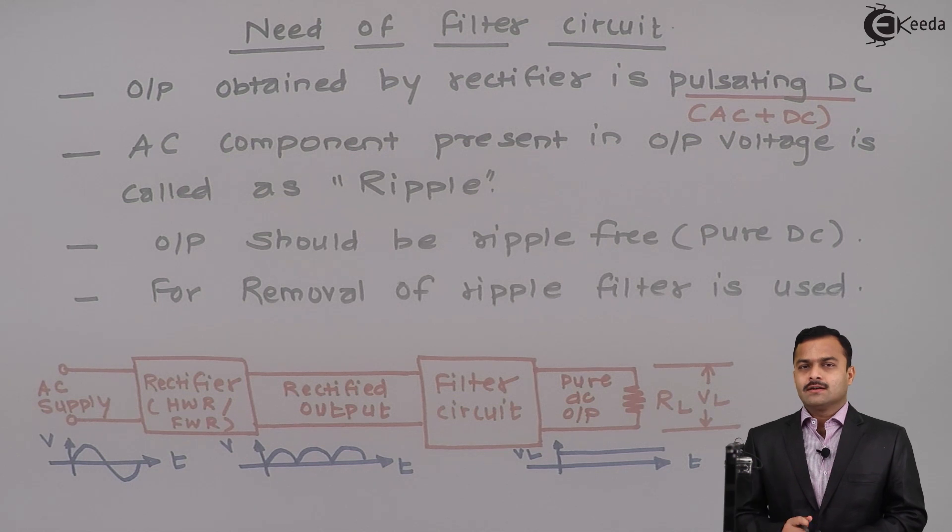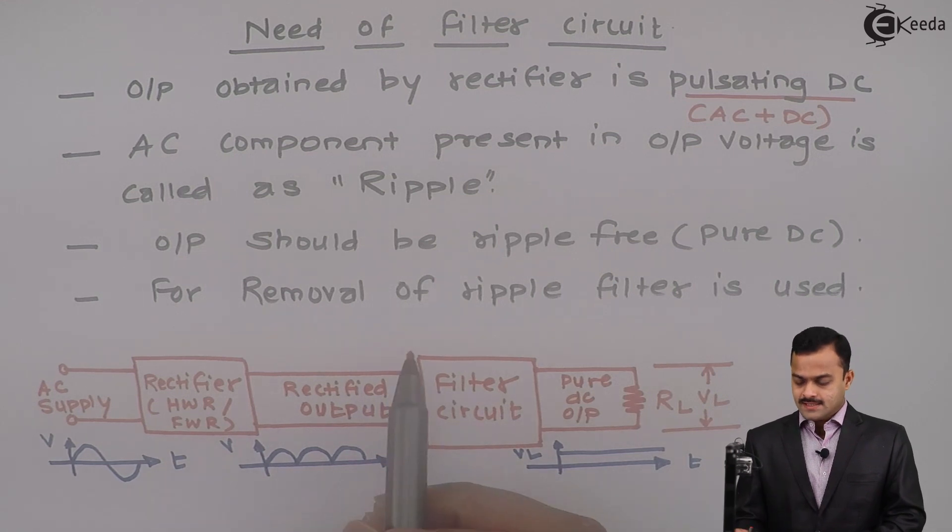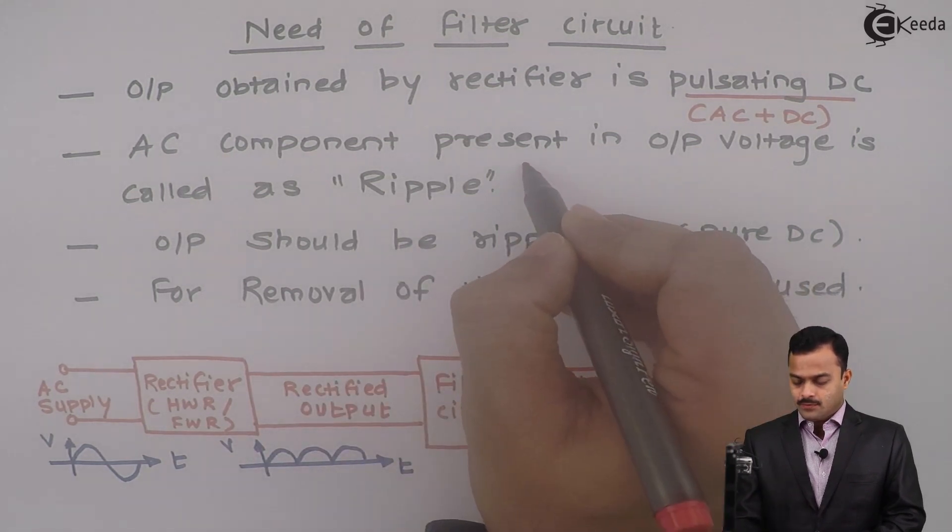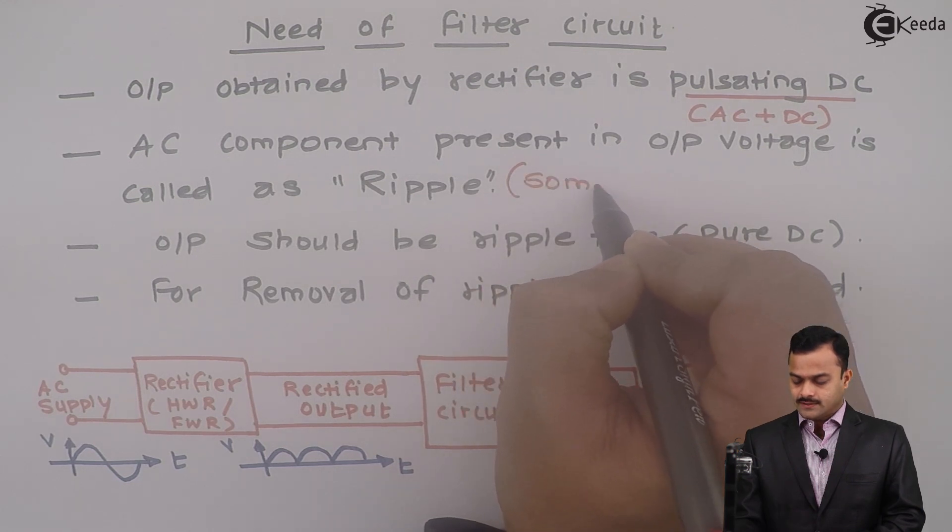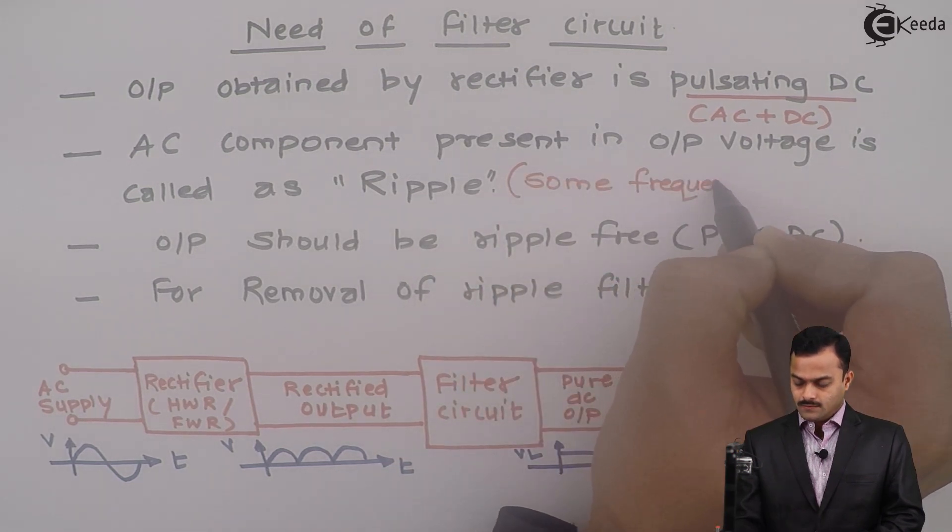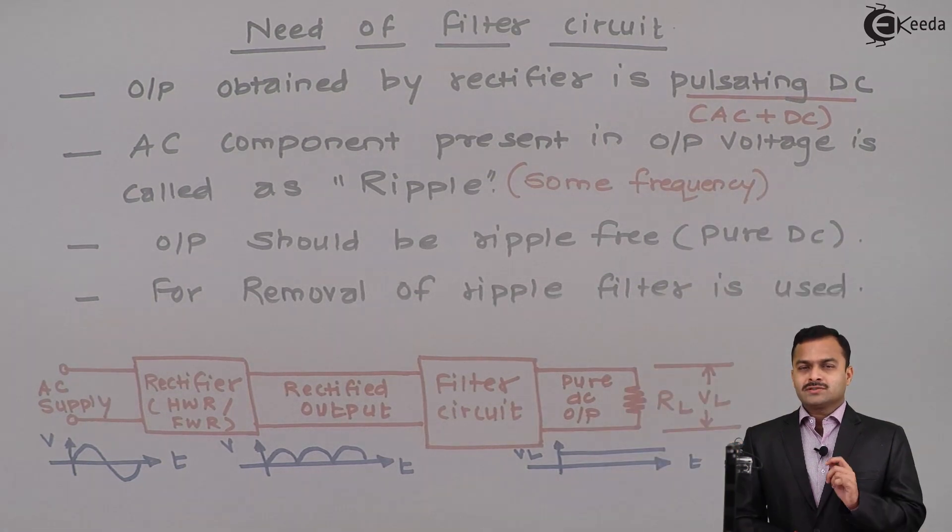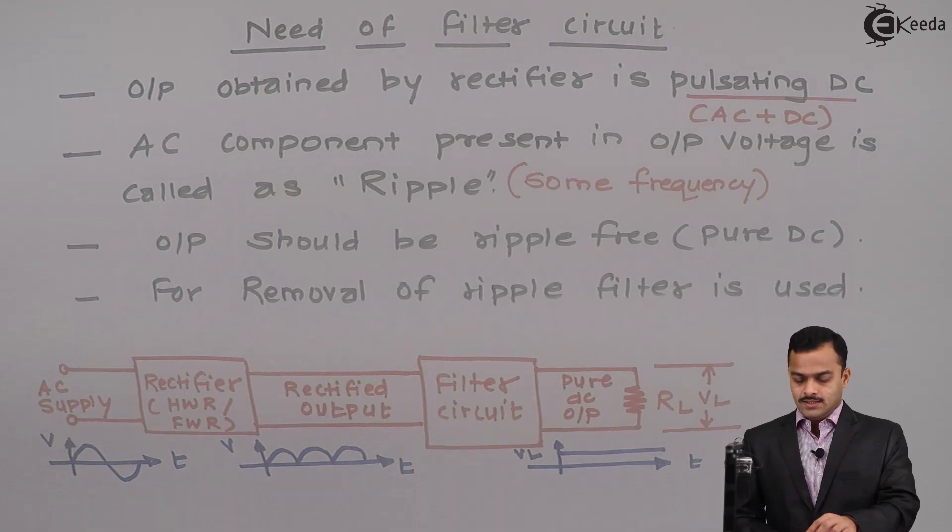Now, let us decide what are the components that will play a role in making a filter circuit. Since the ripple is AC component, it has some frequency associated with it. We need to select an element whose resistance or reactance depends upon a frequency. Generally for filter circuit, we use inductor and capacitors.